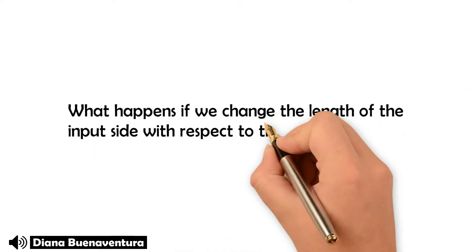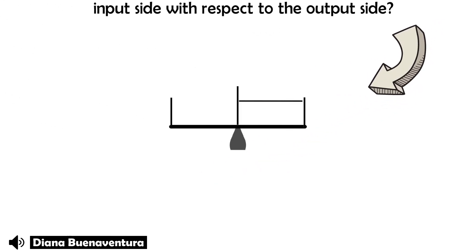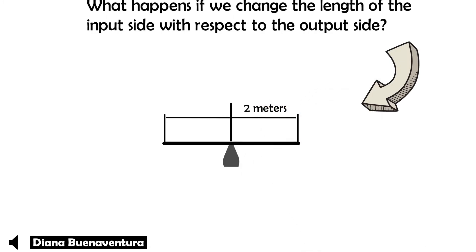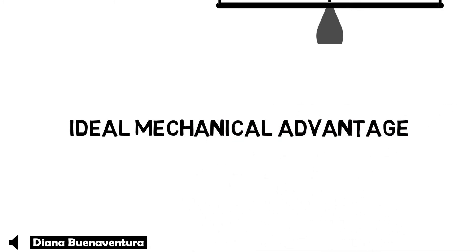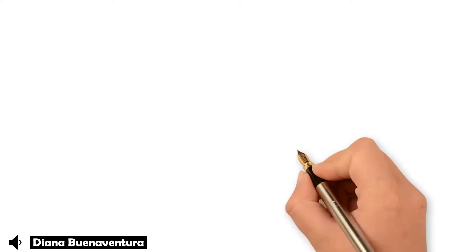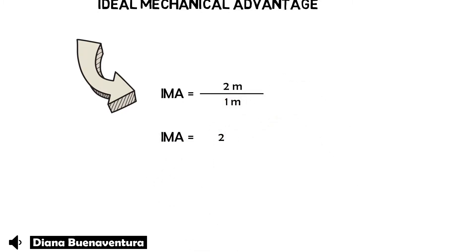What happens if we change the length of the input side or effort with respect to the output side or load? We change the output side down to 1 meter. The input side stays at 2 meters while the output side is 1 meter. We find the ideal mechanical advantage because it deals with distances — we assume an ideal machine with no friction. Ideal mechanical advantage is simply the ratio of the input side to the output side: 2 divided by 1 equals 2. So this lever will multiply any force you put into it by 2.